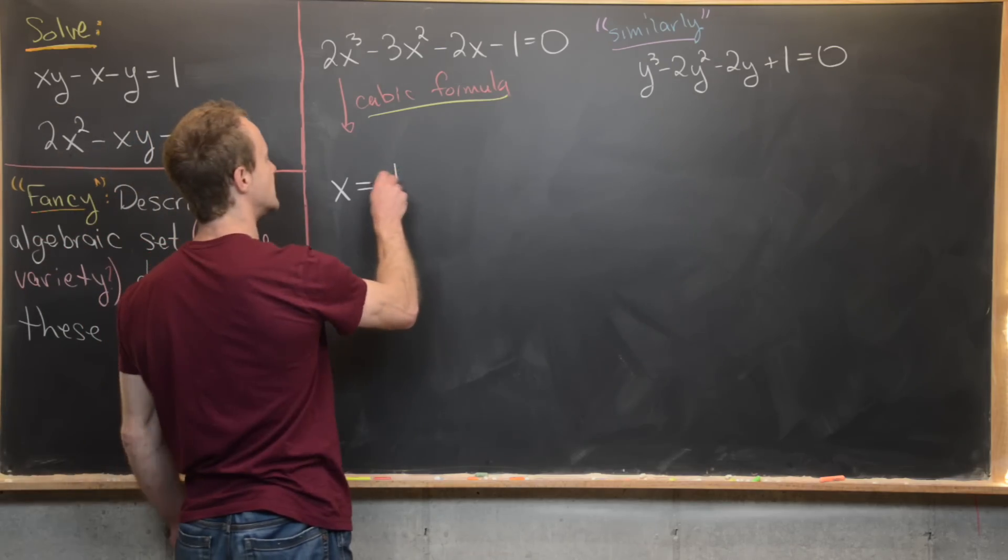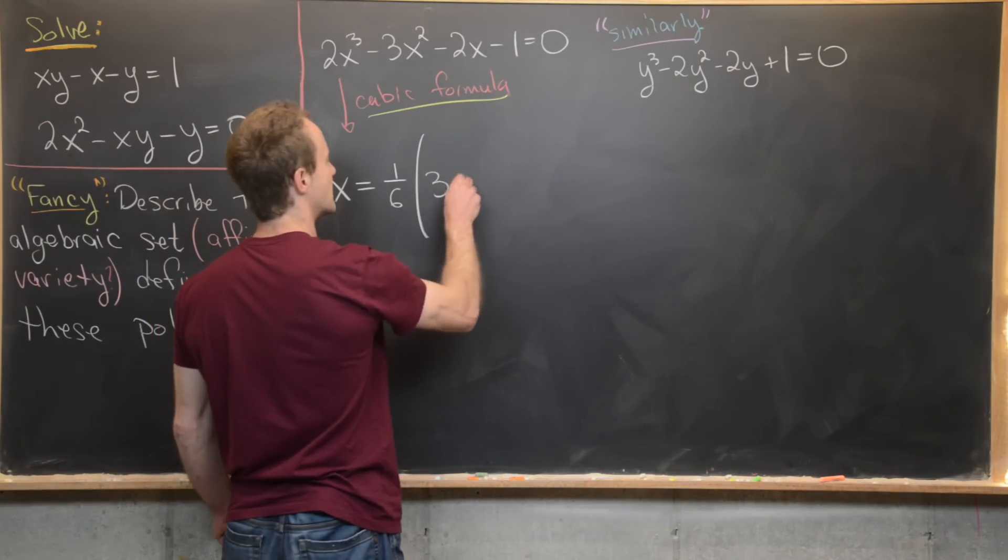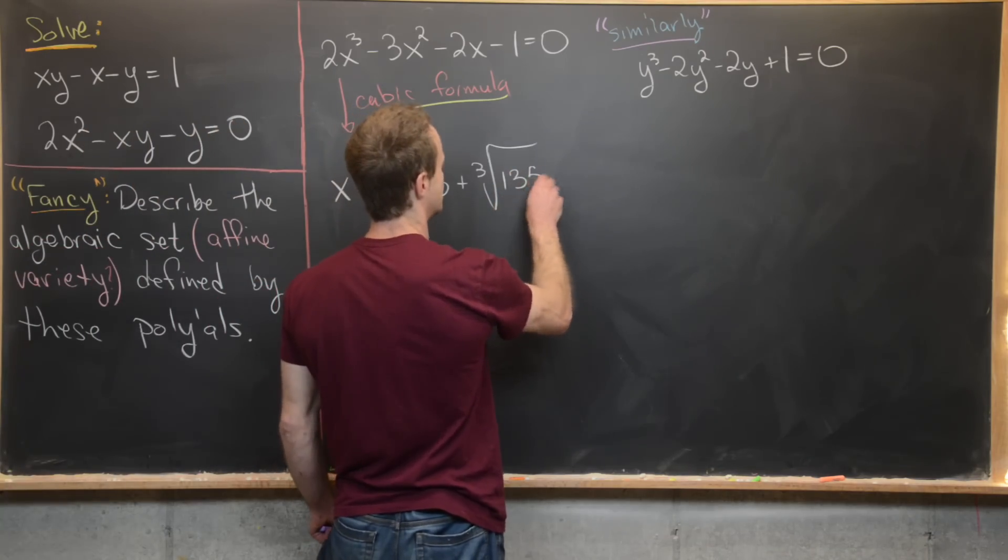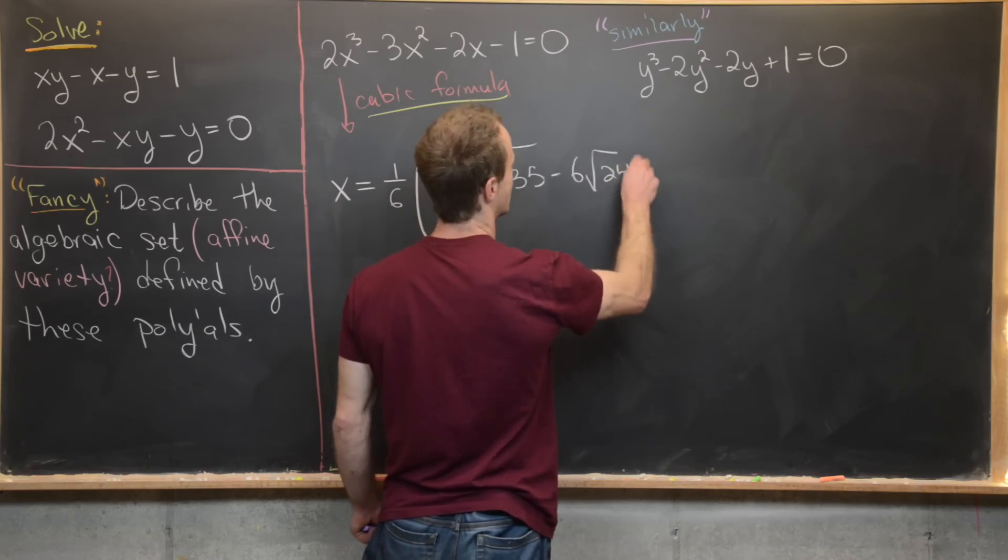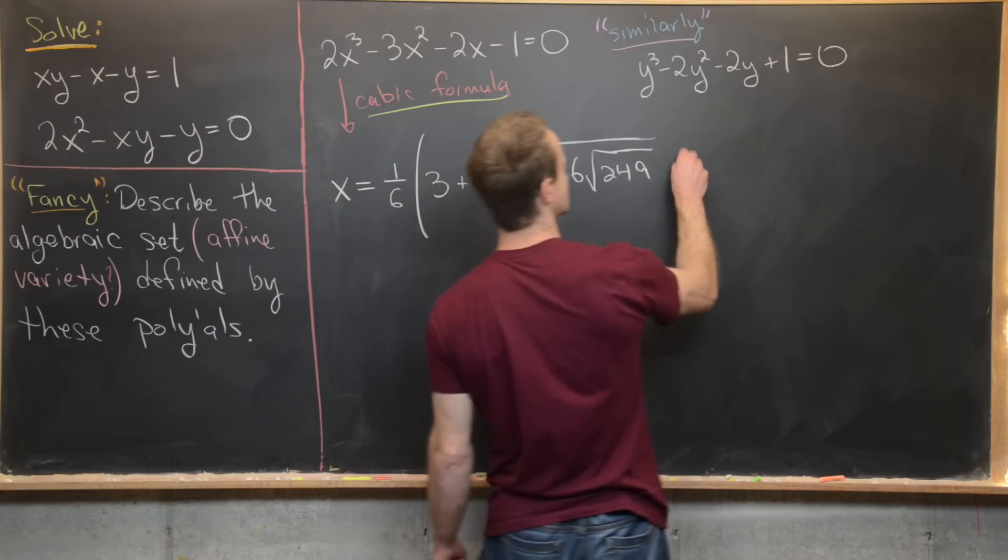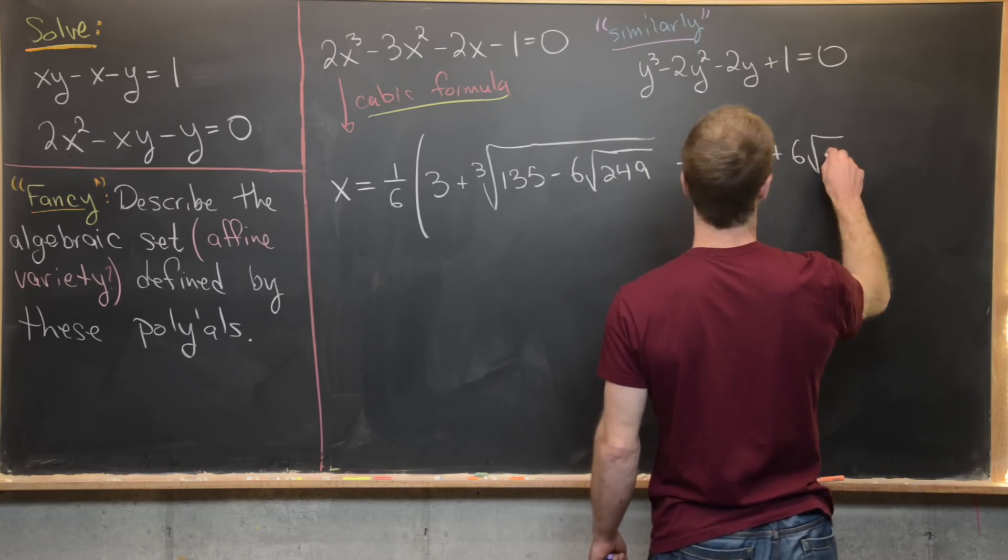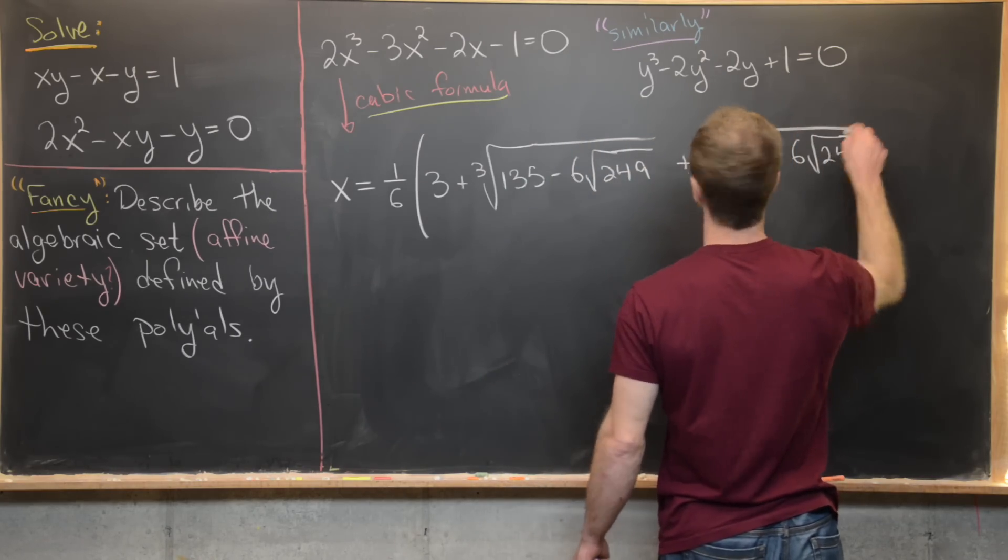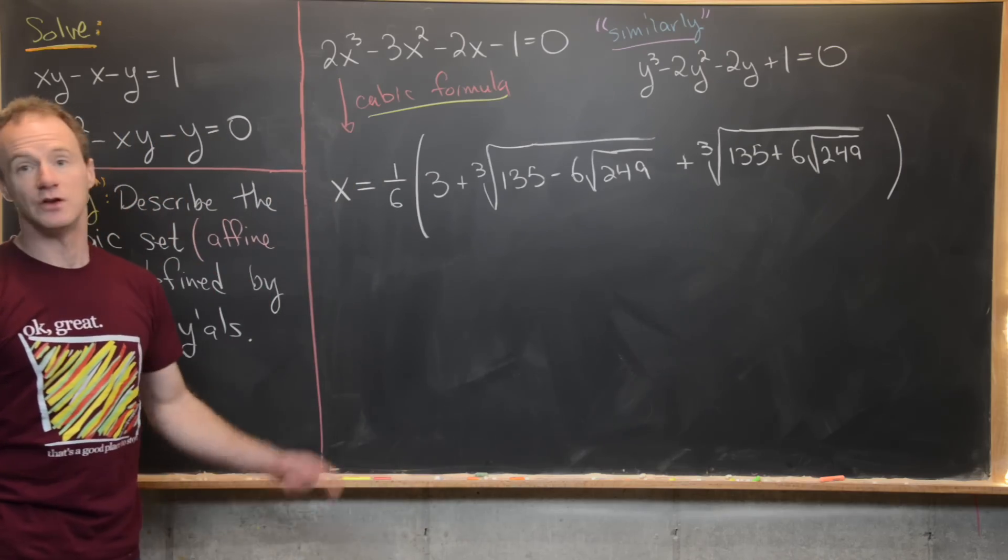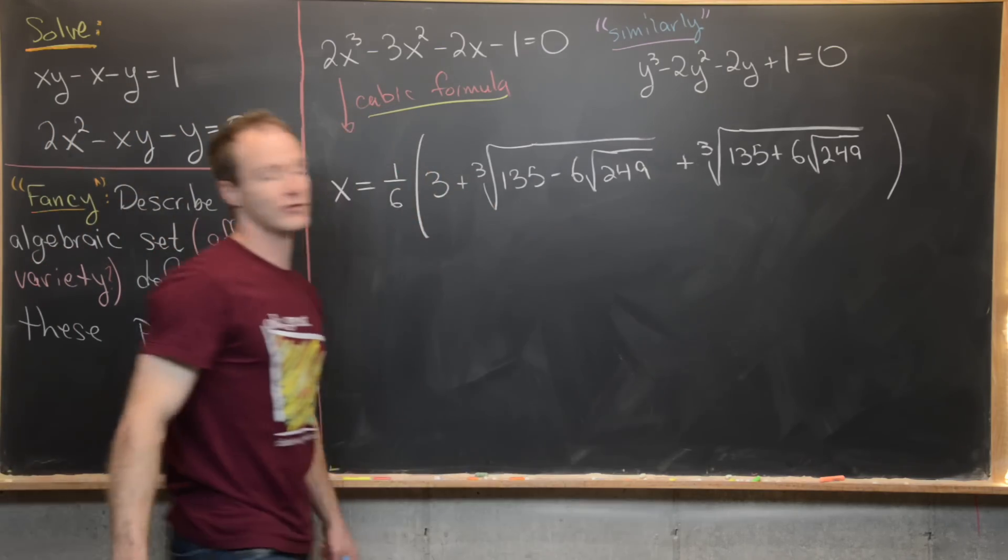So we have x = 1/6. And then it's going to be times a bunch of stuff. And a bunch of stuff will be 3 + ∛(135 - 6√249). Like that. And then we have the companion term to that, which is going to be the ∛(135 + 6√249). So that's our real value of x, which will satisfy this equation. And then you can get the complex values again, by putting roots of unity right here, third roots of unity right here.